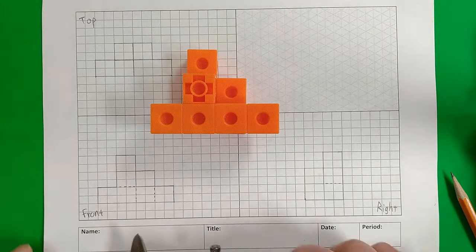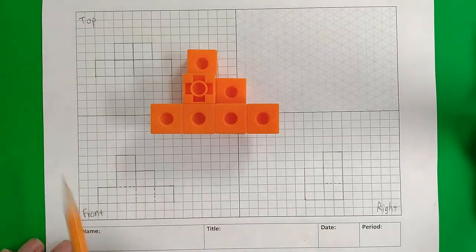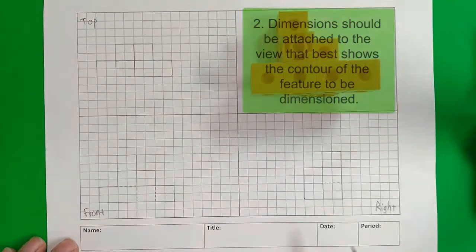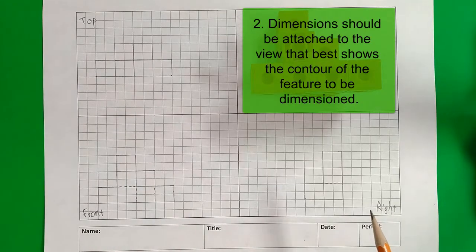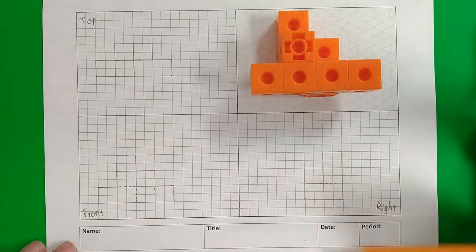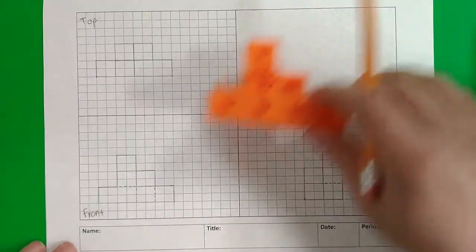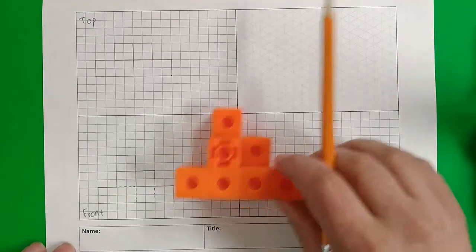So I'm going to have that available and we're going to look at our shapes here. Now when dimensioning it's easiest to put the dimension on the side that best shows the contour and one technique that often works for a lot of people is that we put width in the front, height on the right, and depth on the top. So let's start with our width measurement.